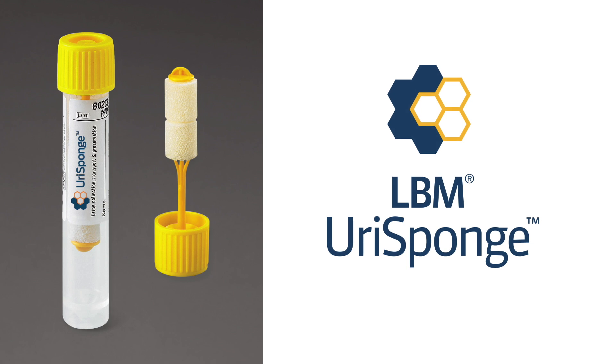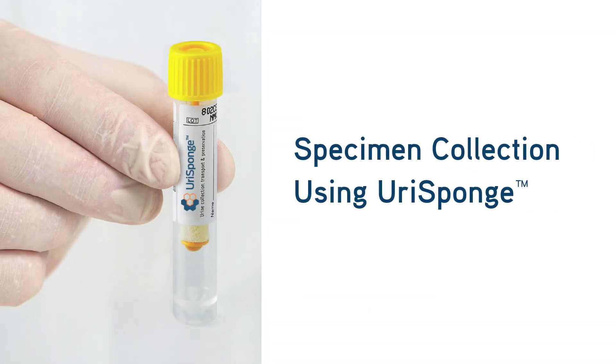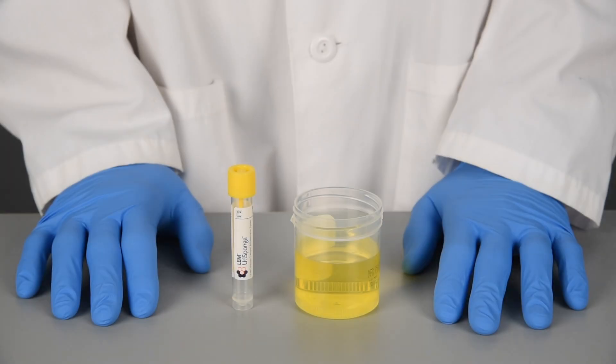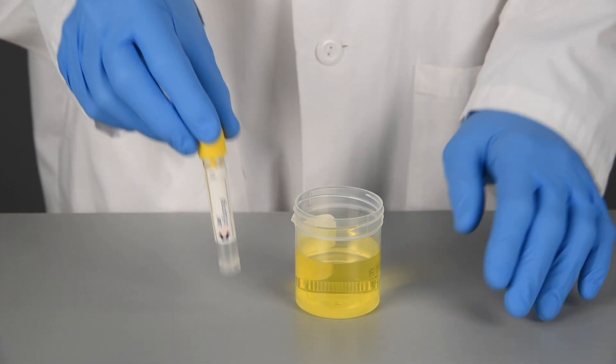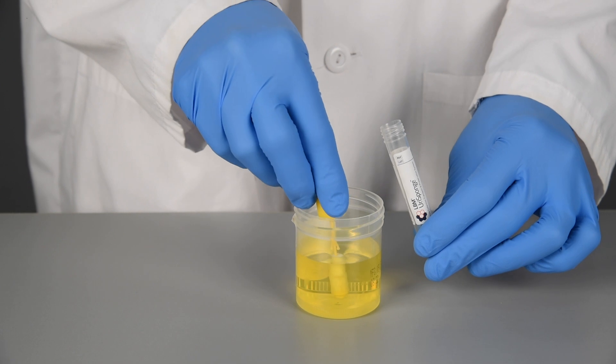Copan UriSponge instructional video: Specimen collection using UriSponge. Obtain a clean catch urine sample from the midstream portion into a sterile container. Open the UriSponge tube and, holding by the cap, dip the sponge applicator into the urine sample.